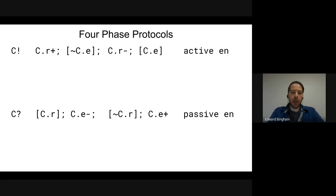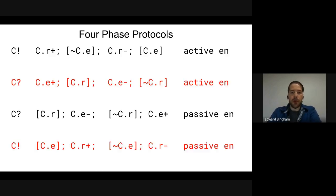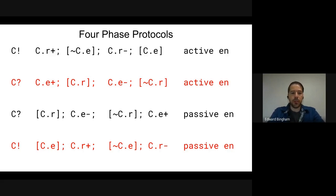There are a wide variety of other four-phase protocols that we can use in its place. We also have active receive and passive send. Instead of the sender starting the communication action, the receiver can start by raising the enable rail. In response, the sender will raise the request rail. The receiver will then lower the enable rail and the sender can then lower the request rail. This is, in a way, just a rotation of the handshake.